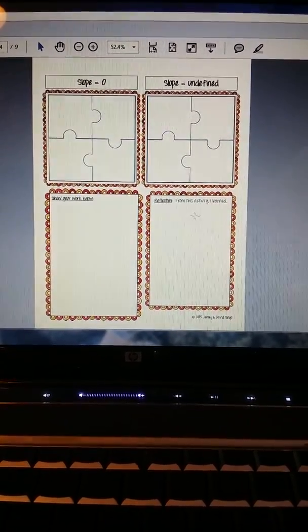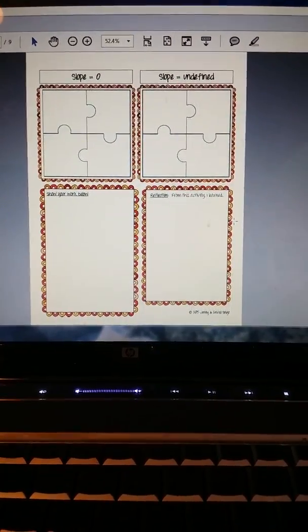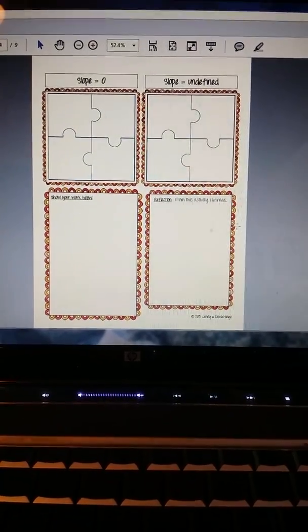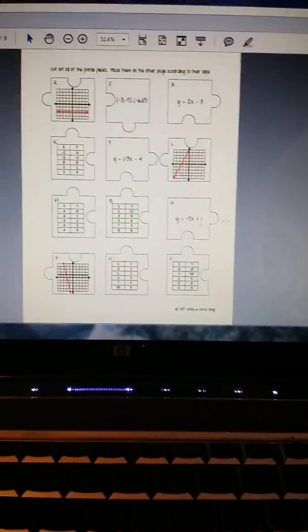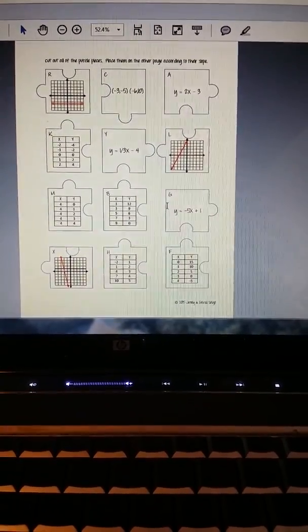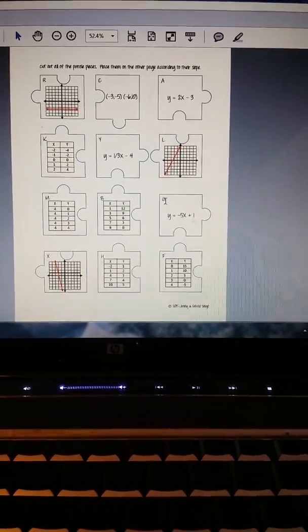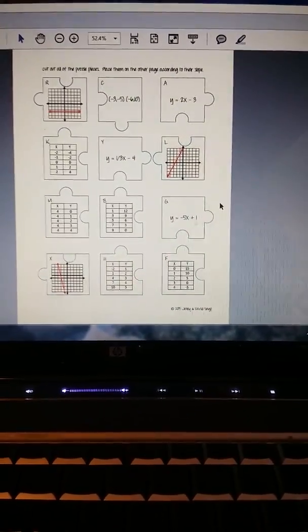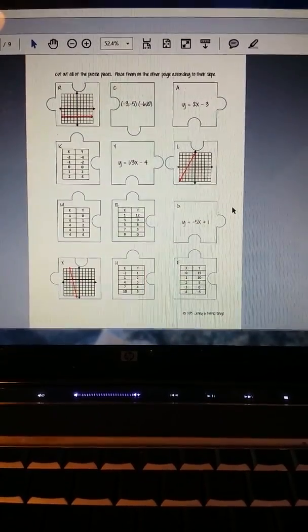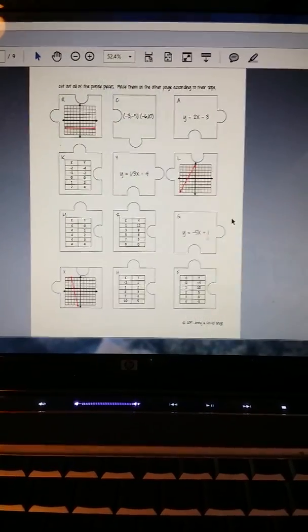And there's also an area where students are going to reflect upon what they learned from this activity. There are two pages of puzzle pieces, and you will see the puzzle pieces have a letter on the top left. That is to help you with the answer key so that you can see if students did the activity correctly.